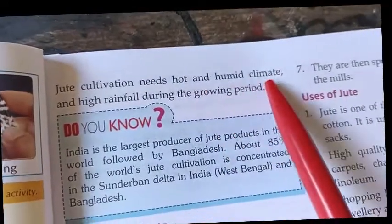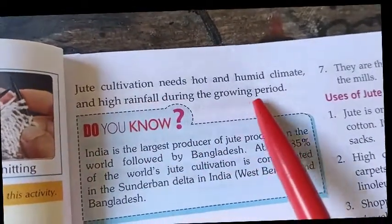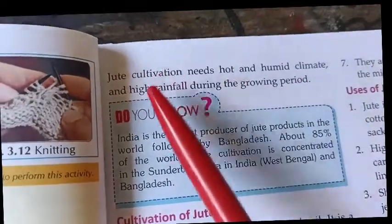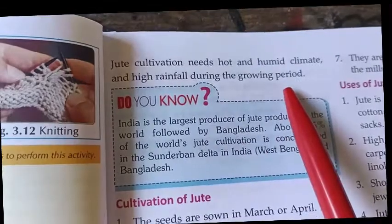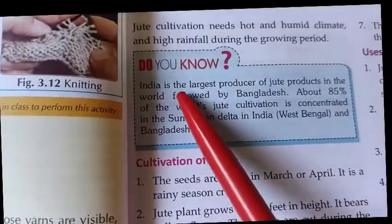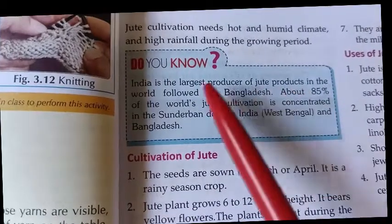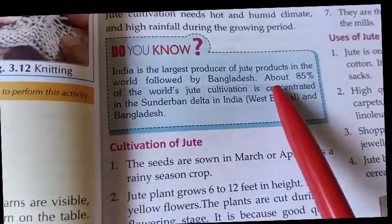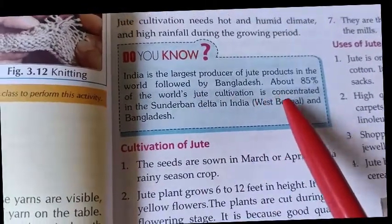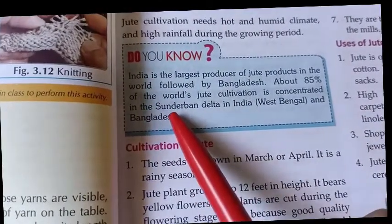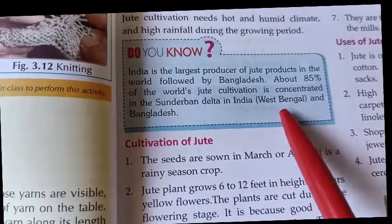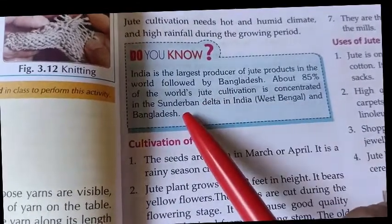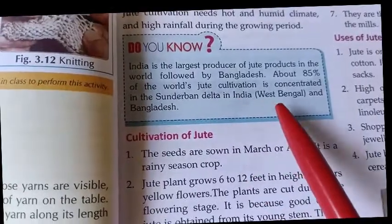Jute cultivation needs a hot and humid climate with high rainfall during the growing period. India is the largest producer of jute products in the world, followed by Bangladesh. About 85 percent of the world's jute cultivation is concentrated in the Sundarbans delta in West Bengal, India, and Bangladesh.